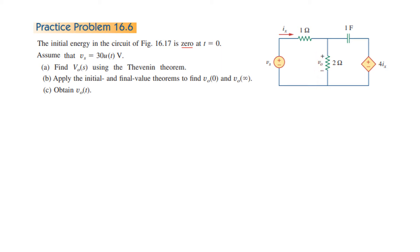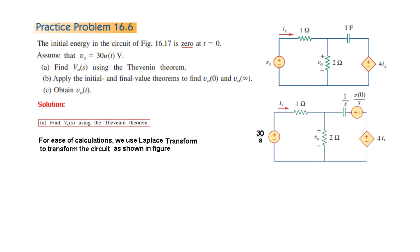The first step is to find V_o(s) by converting the circuit into the S-domain. The voltage 30u(t) becomes 30/s. There is no change in the resistors, but the capacitor gets value 1/(sC). Since C = 1, this becomes 1/s. We add the initial condition voltage, and the dependent source remains as is. This is the S-domain circuit.